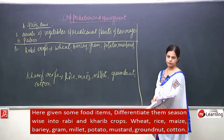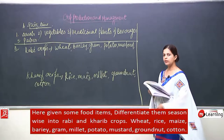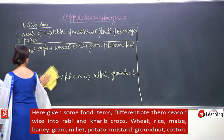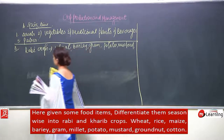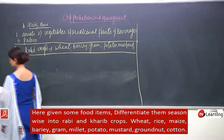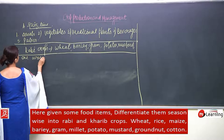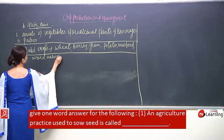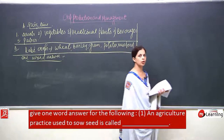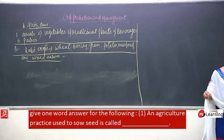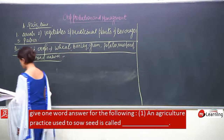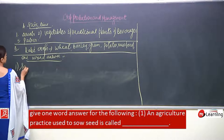Come to the next one — one-word answers. An agricultural practice used to sow seeds is called sowing. So simple — the answer is sowing.